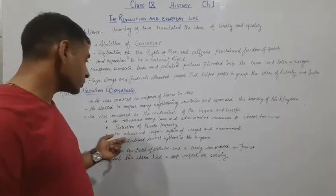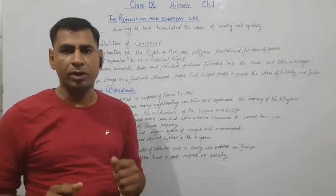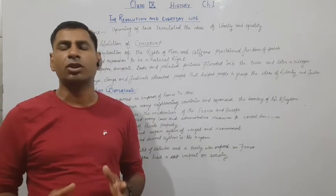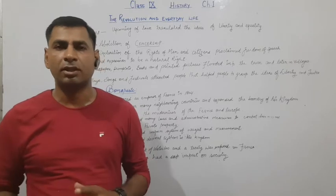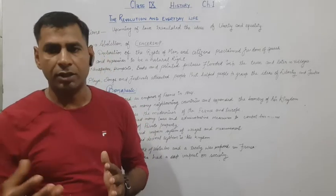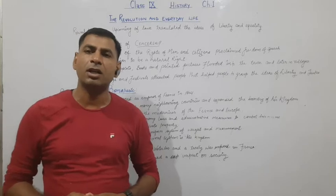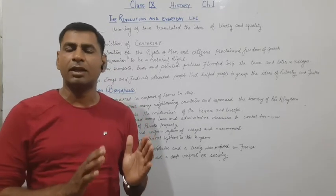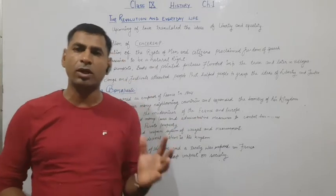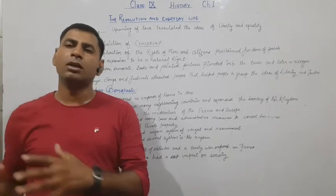He introduced a uniform system of weights and measurements. In France and European countries, every country had its own weighing system, which was so different that merchants and traders faced difficulties. They wanted a system with uniformity. Napoleon Bonaparte gave them a single uniform European weighing and measurement system, standardizing the different measurements across countries.